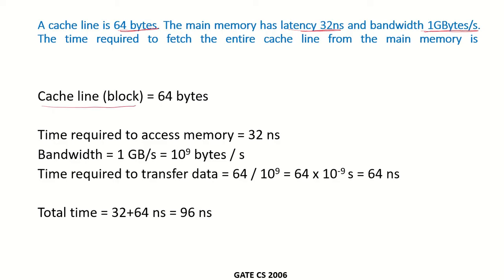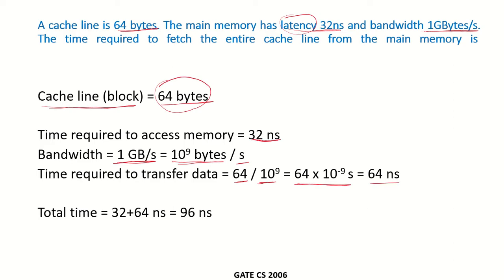The cache line or block size is 64 bytes, the latency to access main memory is 32 nanoseconds, and the bandwidth is 1 gigabyte per second, which can also be written as 10 to the power of 9 bytes per second. So the time required to transfer 64 bytes would be 64 divided by 10 to the power of 9, which is 64 nanoseconds.